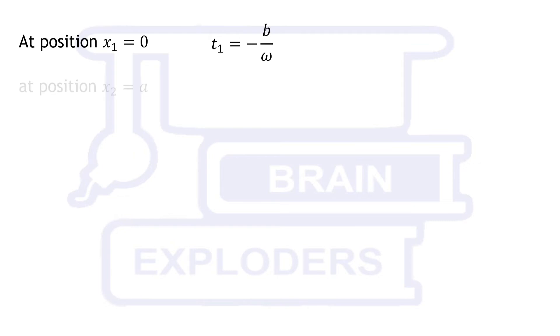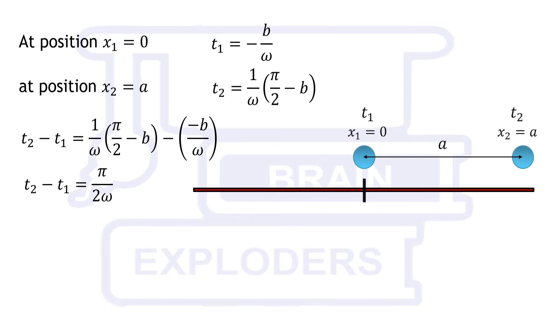It is one fourth of the time period of SHM because time period of SHM is defined as the time interval between two successive positions of object which are in the same phase, that means same position and direction.